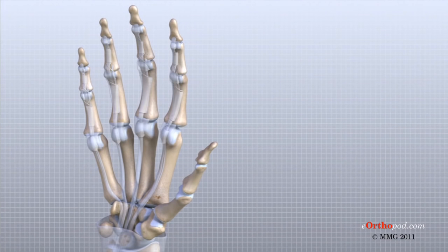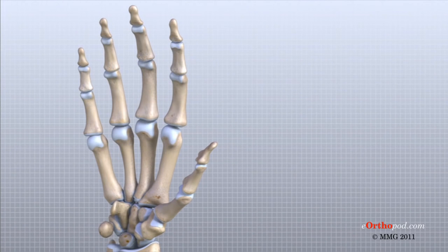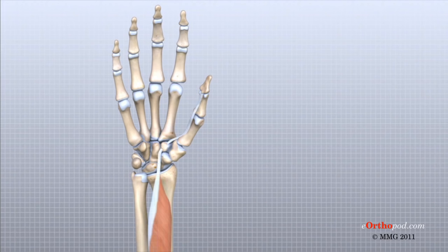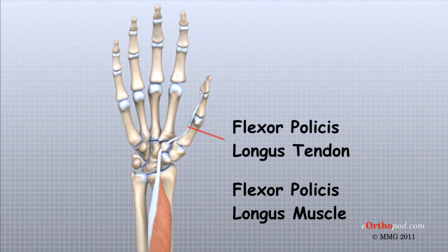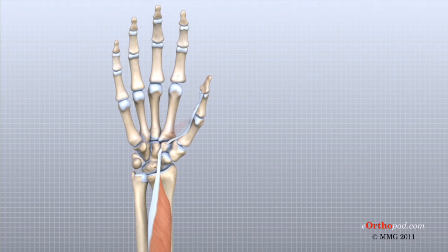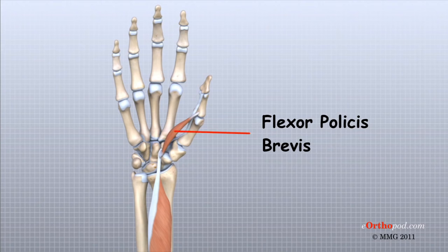The thumb is a bit different since it only has two phalanges. The flexor pollicis longus begins in the forearm, and its tendon connects to the base of the distal phalanx of the thumb. The flexor pollicis brevis muscle begins in the wrist, and its tendon connects to the base of the proximal phalanx of the thumb.